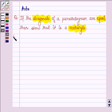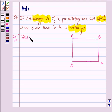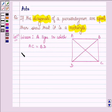Let us begin with the solution. Let ABCD be the given parallelogram in which the diagonals are equal, that is AC equals BD, and we have to show that parallelogram ABCD is a rectangle.